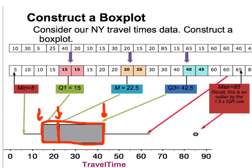Next we denote the minimum and maximum. The minimum was 5, so a dot is placed at 5 and connected from the middle of the box — this is called a whisker. For the maximum, remember that 85 was considered an outlier, so we denote it with a separate dot. The whisker then extends to the next highest value that is not an outlier, which is 65. This is called a modified box plot because it includes and depicts the outlier.